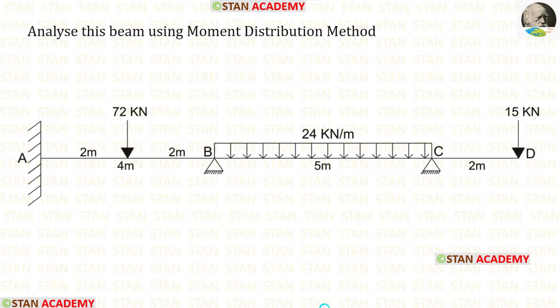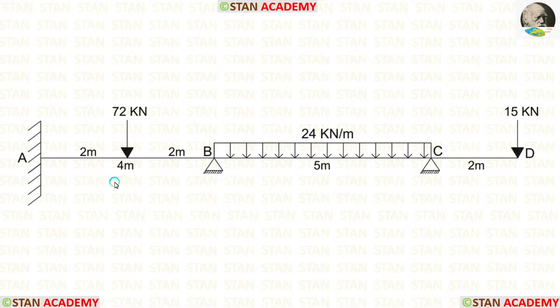Before analyzing, let us see the beam. In this beam, there are two spans: span AB and span BC. Also, there is an overhanging span CD.